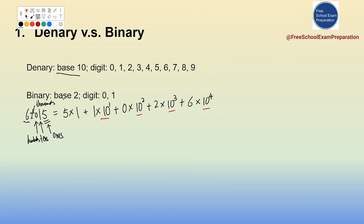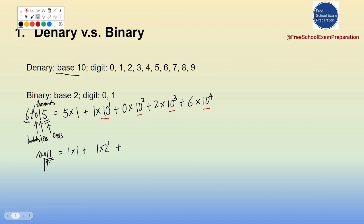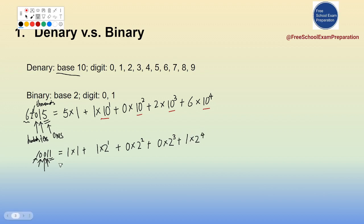Now let's look at a binary number. For example, if we have 1 0 0 1 1 — going from right to left — the rightmost 1 shows we have one unit (2 to the power of 0). The next digit is 1 times 2 to the power of 1. Then we have 0 of 2 to the power of 2, and 0 of 2 to the power of 3. Finally, the leftmost 1 shows one of 2 to the power of 4. Summing up: 1 + 2 + 0 + 0 + 16 = 19. Everything here is in base 2.